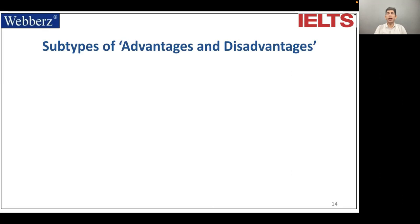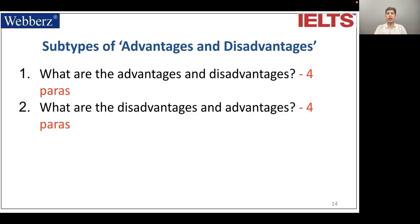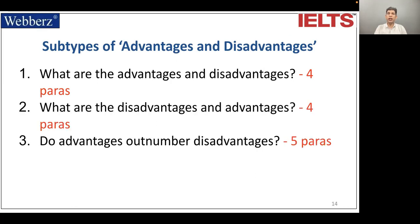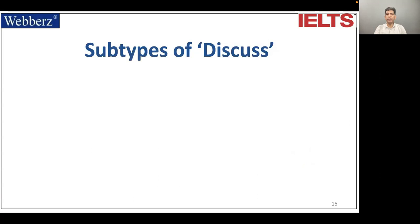Types of advantages and disadvantages: What are the advantages and disadvantages? What are the disadvantages and advantages? Do the advantages outnumber disadvantages? Do the disadvantages outnumber advantages? The first two will be four paragraphs each and the last two will be five paragraphs each.